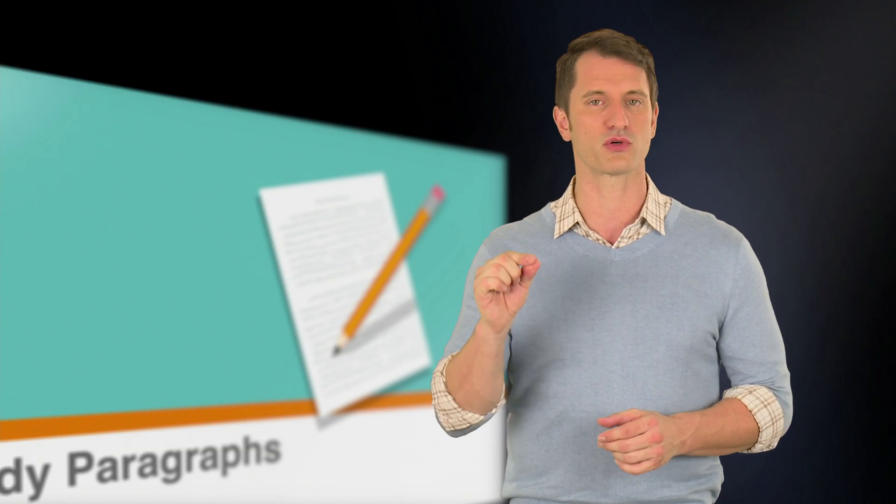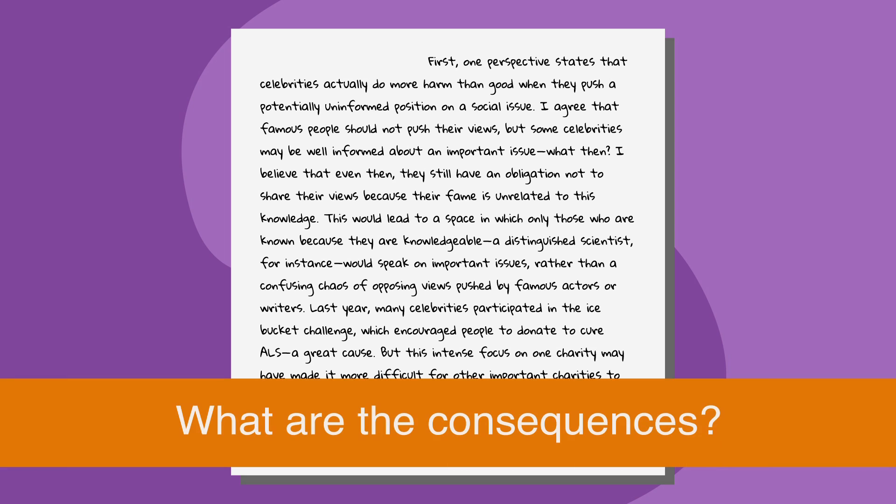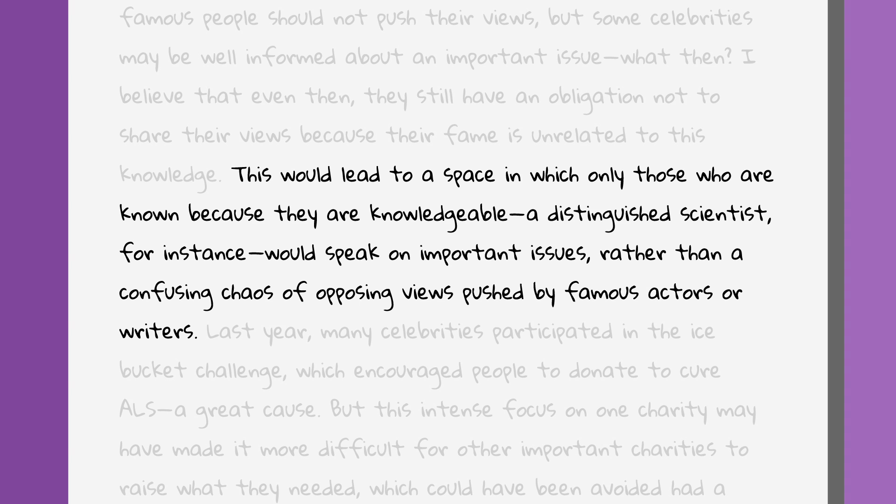Now let's focus on the potential consequences of the perspective. Ask yourself, if this perspective is correct, what might be some of the logical consequences? The example in the sample essay is: this would lead to a space in which only those who are known because they are knowledgeable, a distinguished scientist, for instance, would speak on important issues rather than a confusing chaos of opposing views pushed by famous actors or writers.